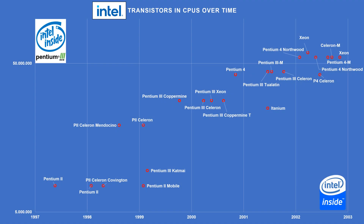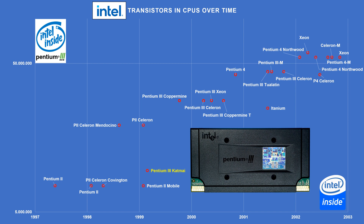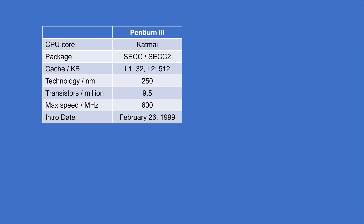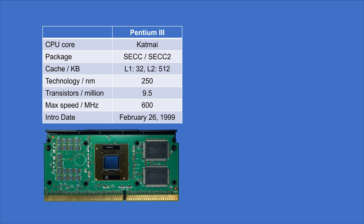There are three main members — so-called CPU cores — of the Pentium 3 family: the Katmai core, followed by the Coppermine core and the Tualatin core. The Katmai was launched as a Single Edge Contact Cartridge (SECC2). All Pentium 3 cores have 32 KB first level cache — 16 for instructions and 16 for data — but they differ in second level cache size and speed. The Katmai's second level cache was not on-chip and ran only at half the CPU speed. Produced at 250 nanometers, the Katmai had 9.5 million transistors and was available at up to 600 MHz.